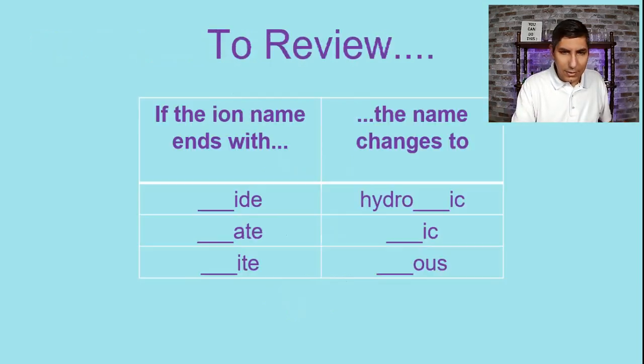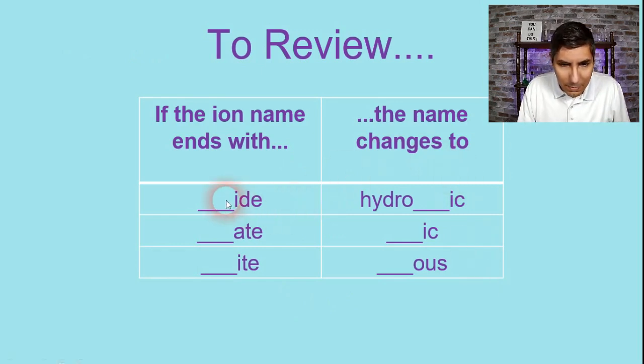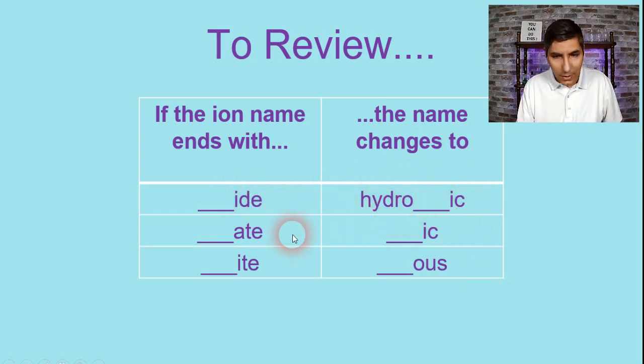So to summarize all this, here are the rules for naming acids. If the anion's name ends with IDE, then we have the stem with the IC on the end and hydro on the front. If it's a stem with ATE, we just change the suffix to IC. And then if it ends with ITE, we change it to US, O-U-S. So I hope you learned something about how to name acids, how to write the formulas for acids. If you did, please slam that like button. I would really appreciate that. And I hope to see you in the next video where we can learn some more chemistry together.